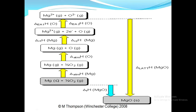For the indirect path, the first step was the conversion of magnesium solid to magnesium gaseous, for which we need the enthalpy of atomization of magnesium. The second step was the conversion of oxygen to gaseous oxygen atoms, for which we need the enthalpy of atomization of oxygen.